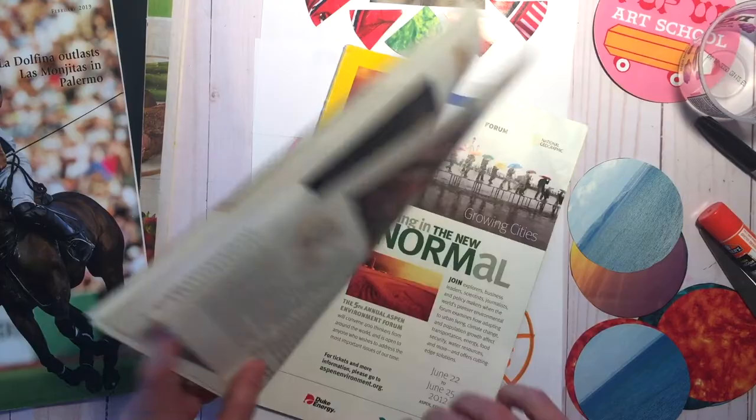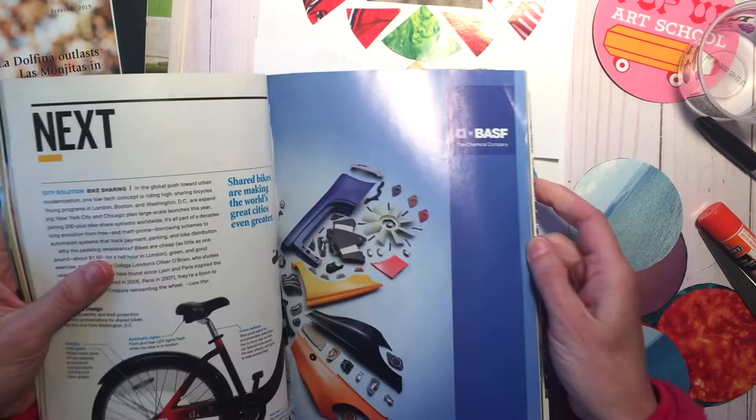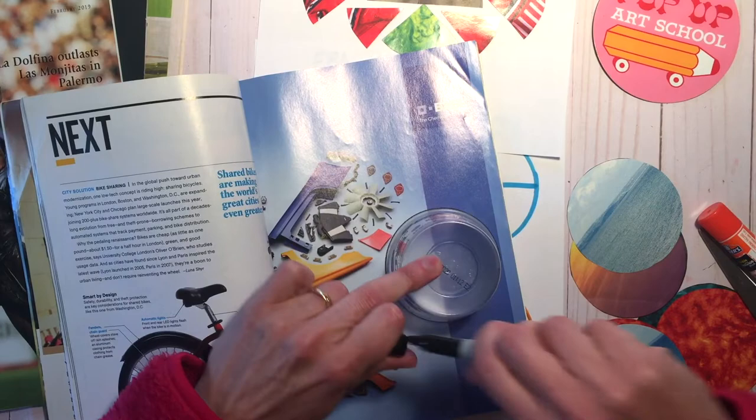All right, so looking through a magazine or junk mail or something, find a page that's got good overall color so that you can fit whatever shape it is that you're going to be tracing. So this blue here looks like I can probably fit this cup in here.